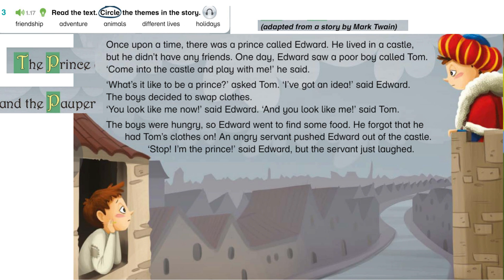"What's it like to be a prince?" asked Tom. "I've got an idea," said Edward. The boys decided to swap clothes. "You look like me now," said Edward. "And you look like me," said Tom. The boys were hungry, so Edward went to find some food. He forgot that he had Tom's clothes on. An angry servant pushed Edward out of the castle.